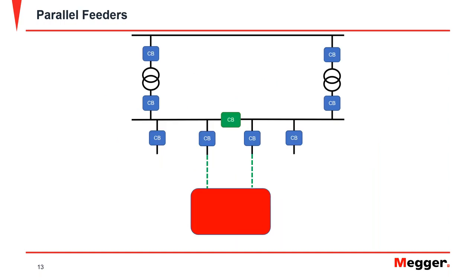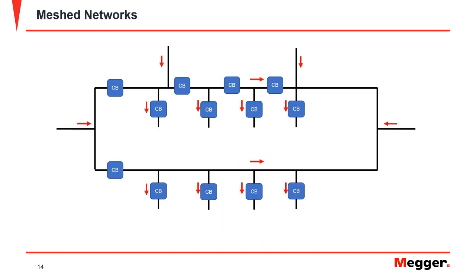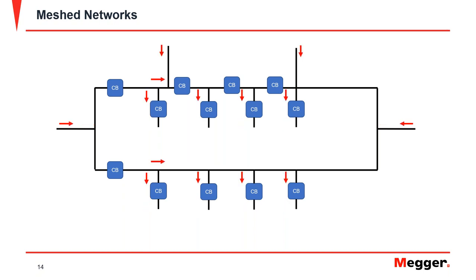Parallel feeders are used to supply important customers where continuity of supply is critical. More than one feeder supplies the customer so that if power is lost in one, the other can supply the load. Mesh networks allow more than one injection point of power into the system. These are harder to protect and design, but much more reliable when it comes to continuity of service.